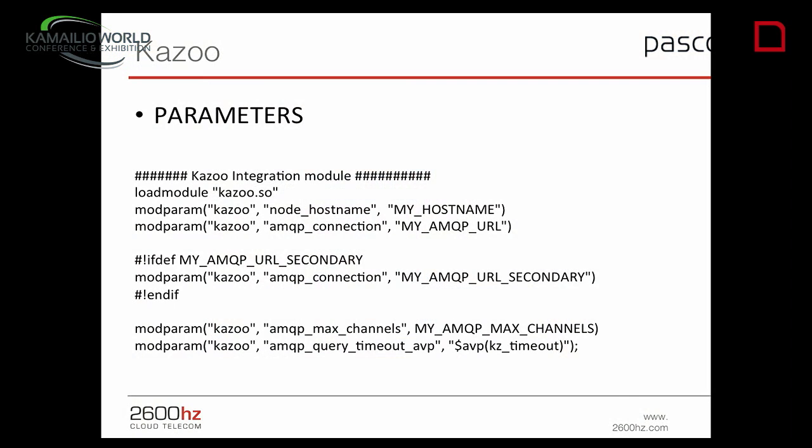It's quite easy to work with the Kazoo module — maybe it will be renamed to AMQP module in the future. We just have a hostname for our own identification inside the AMQP broker and an AMQP URL. Usually it starts with 'amqp:', the server name, user, password, and your virtual host on the RabbitMQ server. You can also define a second connection, and when the Kazoo module loses connection to the first, it will resume with the next one and cycle — first fails, goes to second, third, fourth, then tries from the first again.